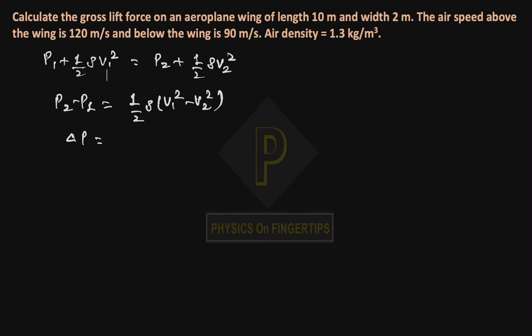This equals half into 1.3 times v1 square, here 120 square minus 90 square. Calculating this, we get delta p equals 4095 Newton per meter square.